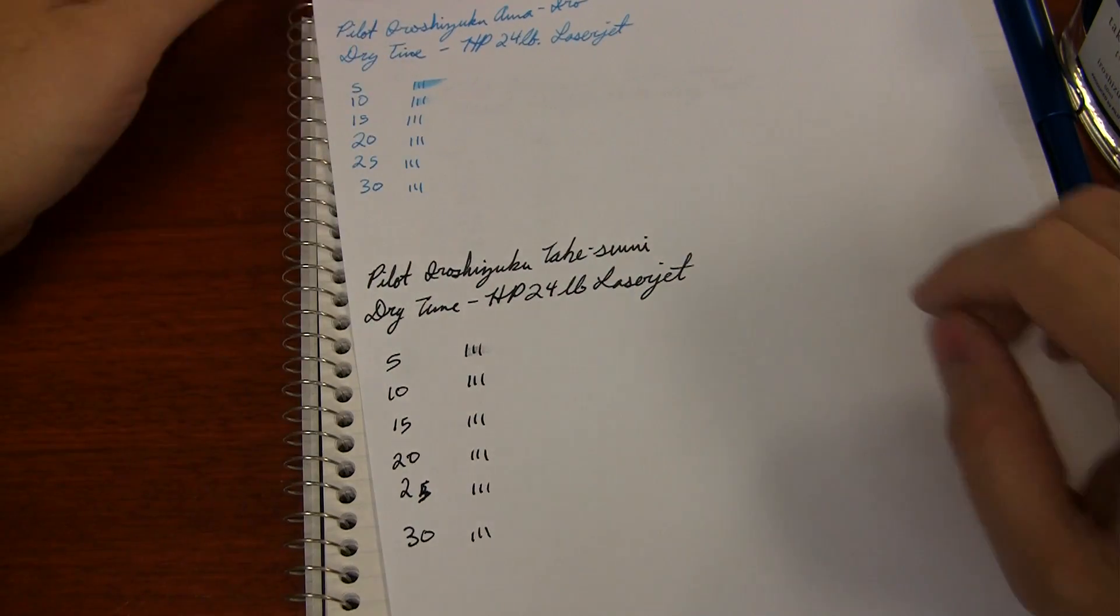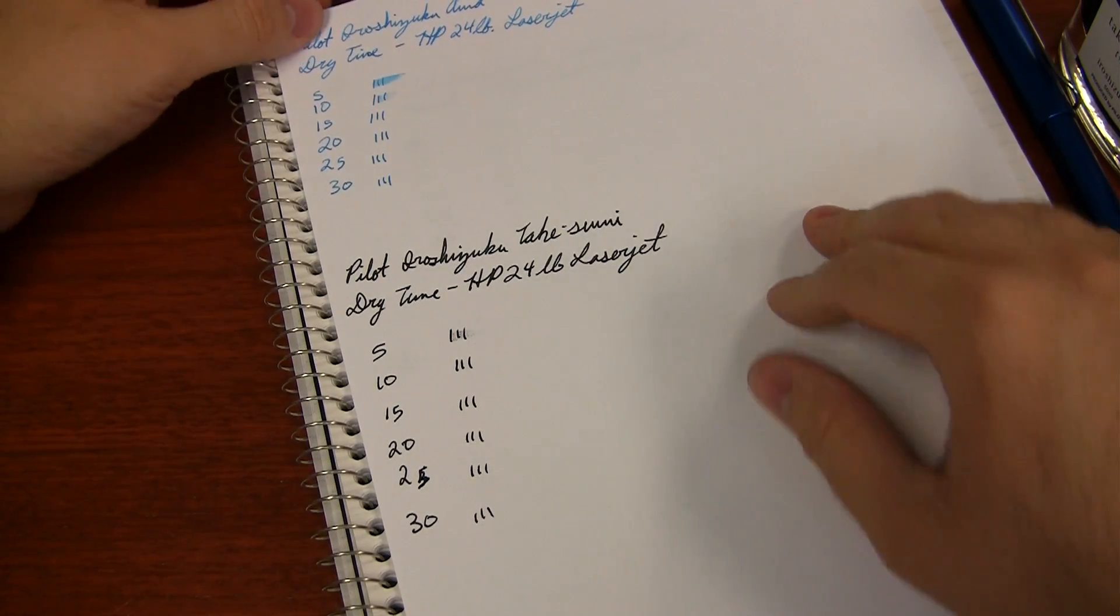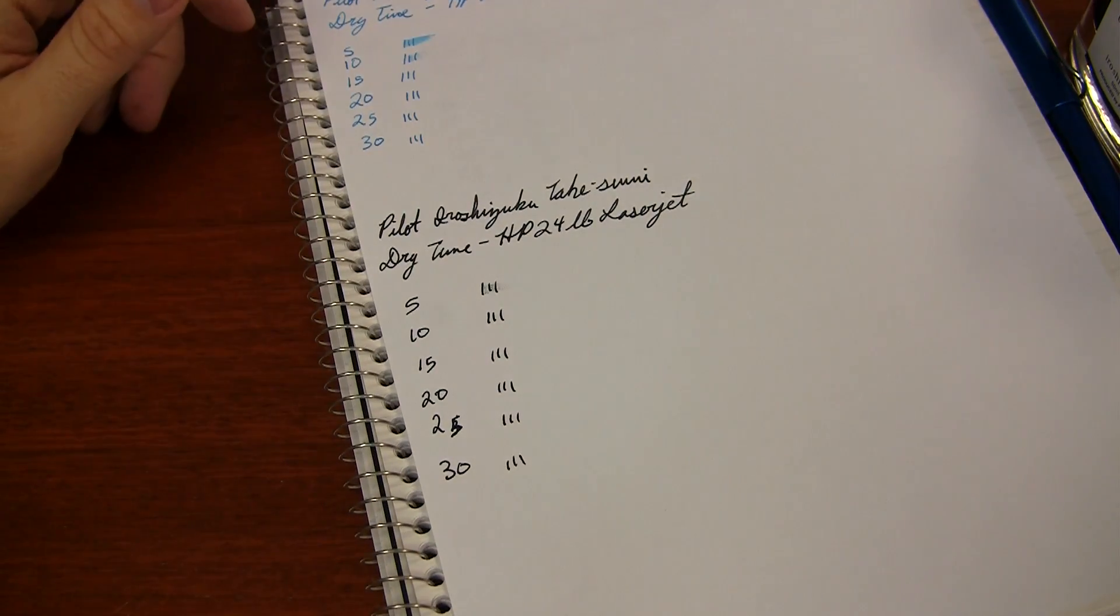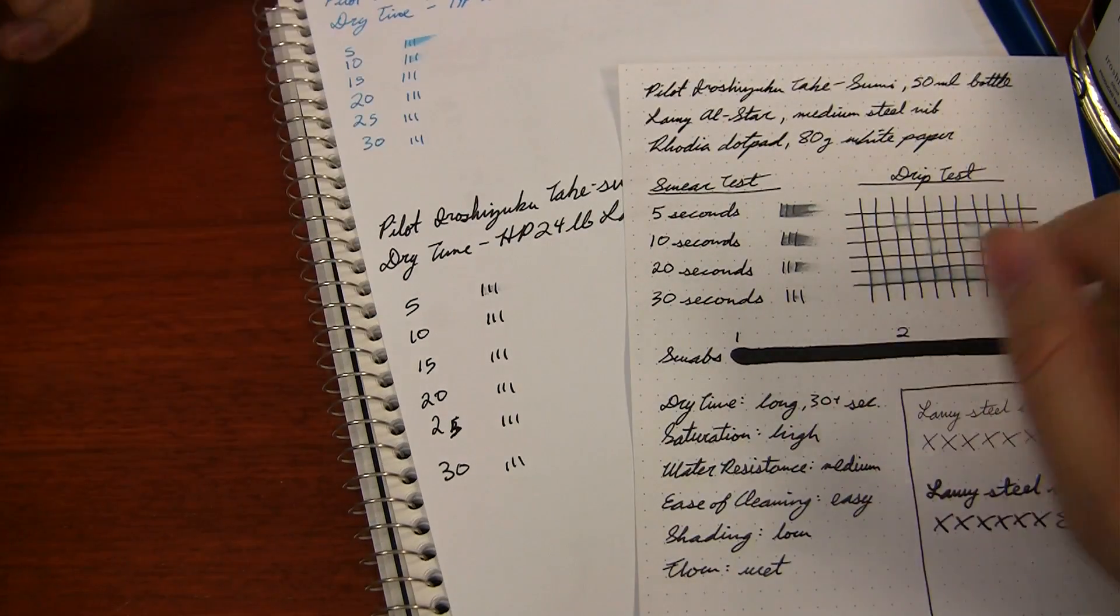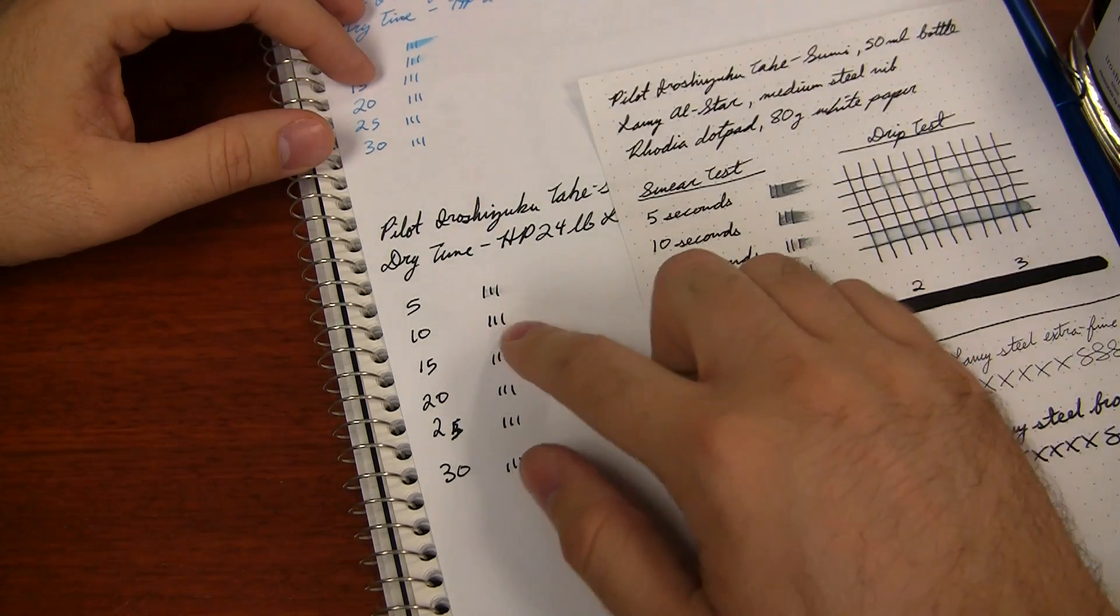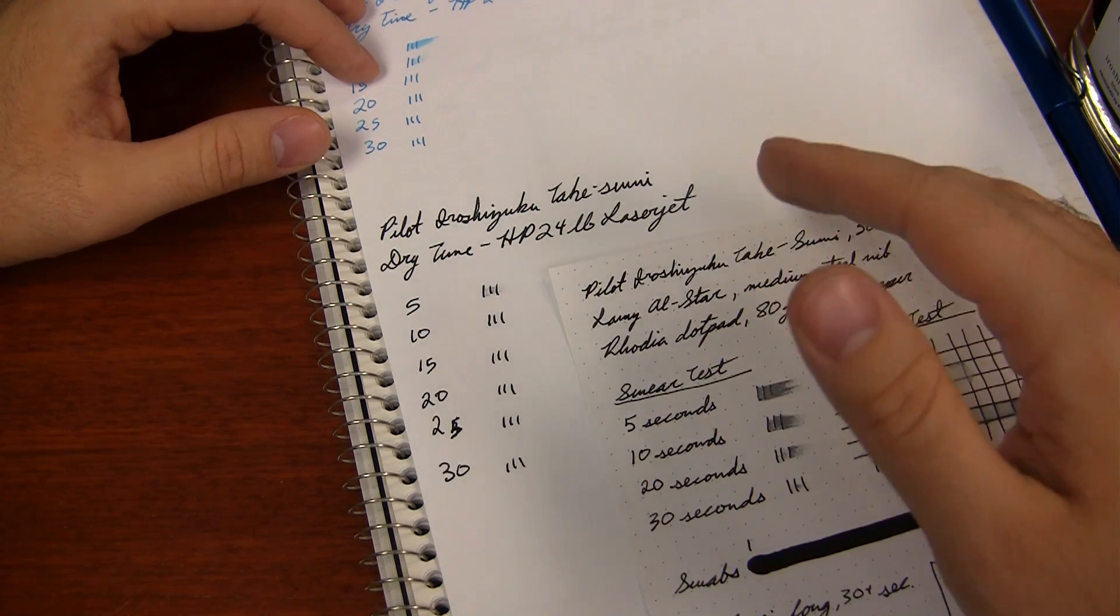I tested it on a couple of different papers. HP 24 pound laser jet paper is kind of like a good middle of the road, somewhat premium paper that I like to test. And you'll notice there's even a big difference between the Rhodia paper and this in terms of its dry time. The Rhodia was upwards of 30 seconds. This was completely dry by 10 seconds. And this is still fairly smooth, fairly good paper.